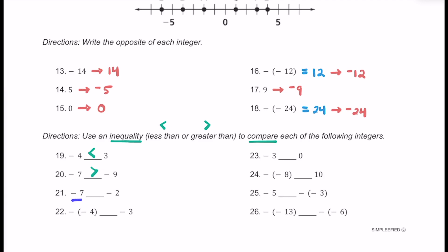For number 21, we have negative 7 and negative 2. If you look at them on the number line, negative 7 is more to the left, so negative 7 has to be smaller than negative 2. For number 22, we have negative negative 4. It's a good idea to simplify that and say it equals positive 4. Comparing positive 4 to negative 3, positives are always going to be greater than negatives, so negative negative 4 is greater than negative 3.